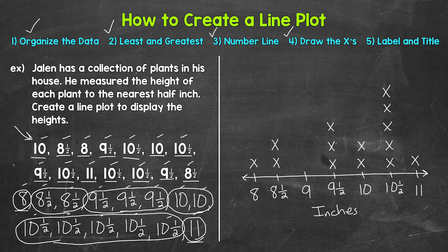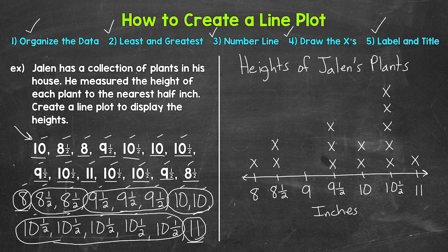And now we need a title that explains what this line plot is about. There's no one exact correct answer here, but we want something that tells the viewer what the line plot is showing. So let's do heights of Jalen's plants. And that's it. That's our label and title. So we are done with our line plot.